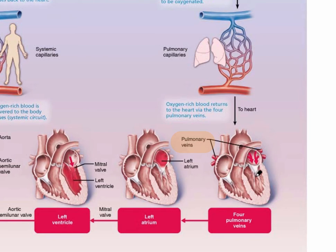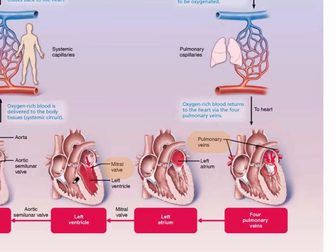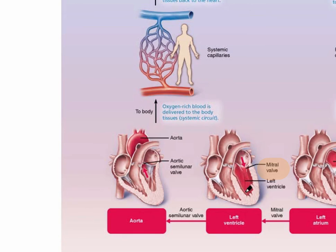Blood goes through the mitral valve, which is the bicuspid valve — also called the left atrioventricular valve. Blood is now in the left ventricle, and it goes from the left ventricle out to the entire system. The myocardial wall is very thick because it has to generate enough pressure to deliver blood to the entire body very quickly. Blood goes through the aortic semilunar valve, which leads to the aorta, where there will be extremely high pressure.